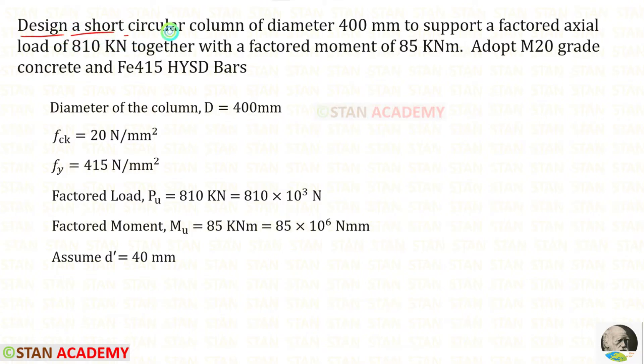Design a short circular column of diameter 400 millimeter, so the diameter D is given as 400 millimeter, to support a factored axial load of 810 kilonewton. The factored load P_u is given as 810 kilonewton. We can convert that into newton with a factored moment of 85 kilonewton meter. The factored moment is given as 85 kilonewton meter.